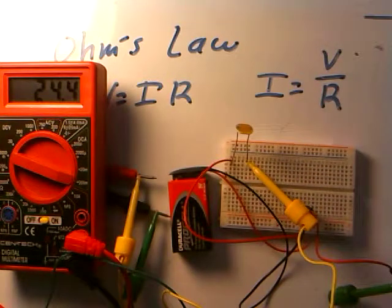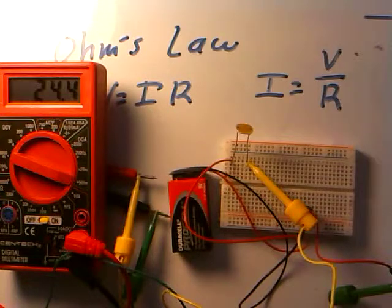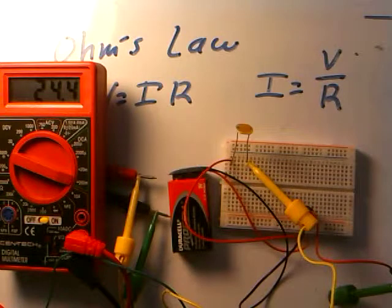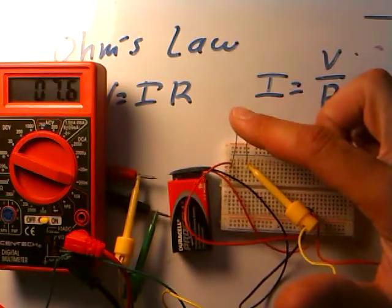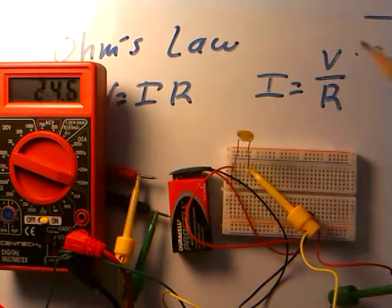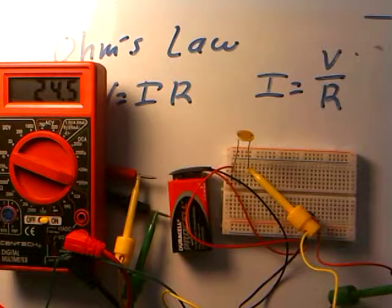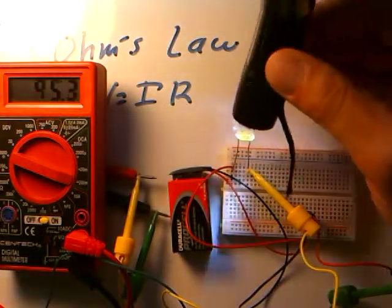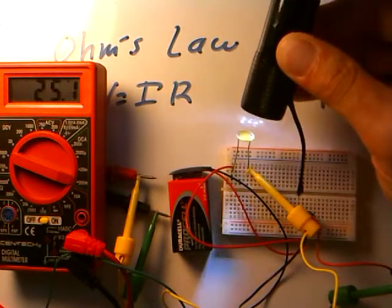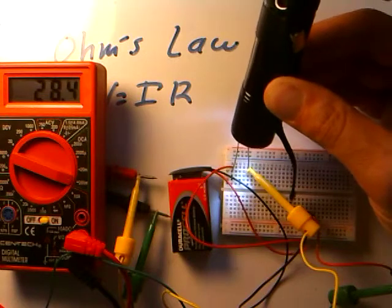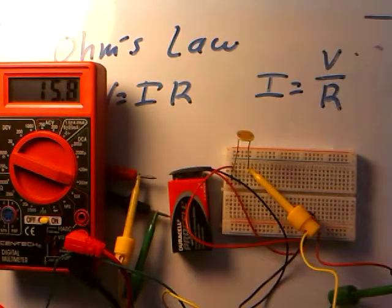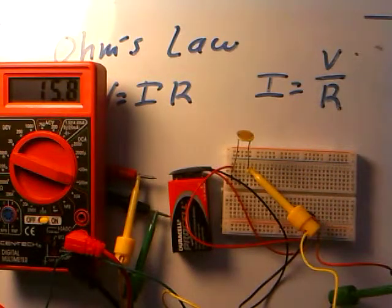This is another example of Ohm's Law — I'm seeing variations in current not because voltage is changing, but because resistance is changing. Photocells have very large resistance when it's dark, so as I cover it, resistance gets large and current drops. If I hit it with bright light from a flashlight, the current goes up to about 27-28 milliamps, because the resistance got very small.